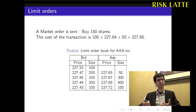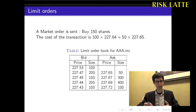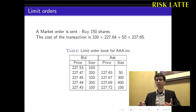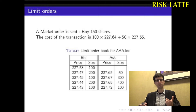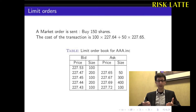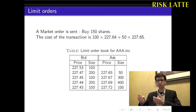As we see, the perfect liquidity assumption is not satisfied because there are two sets of prices, and the size of the trades has an influence on the price per share. So this is an interesting mechanism to model illiquidity.